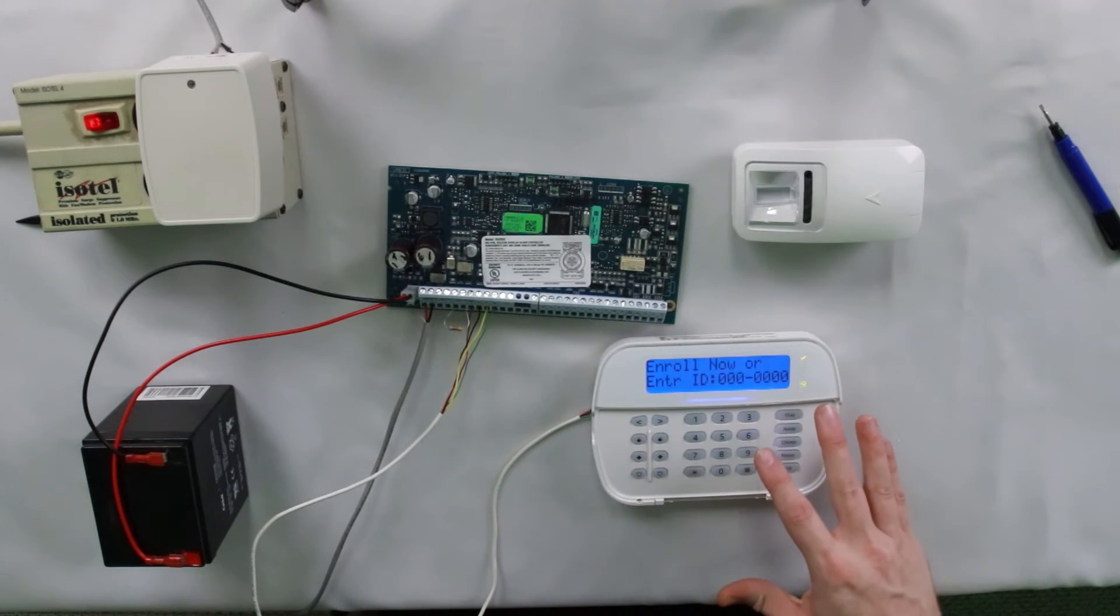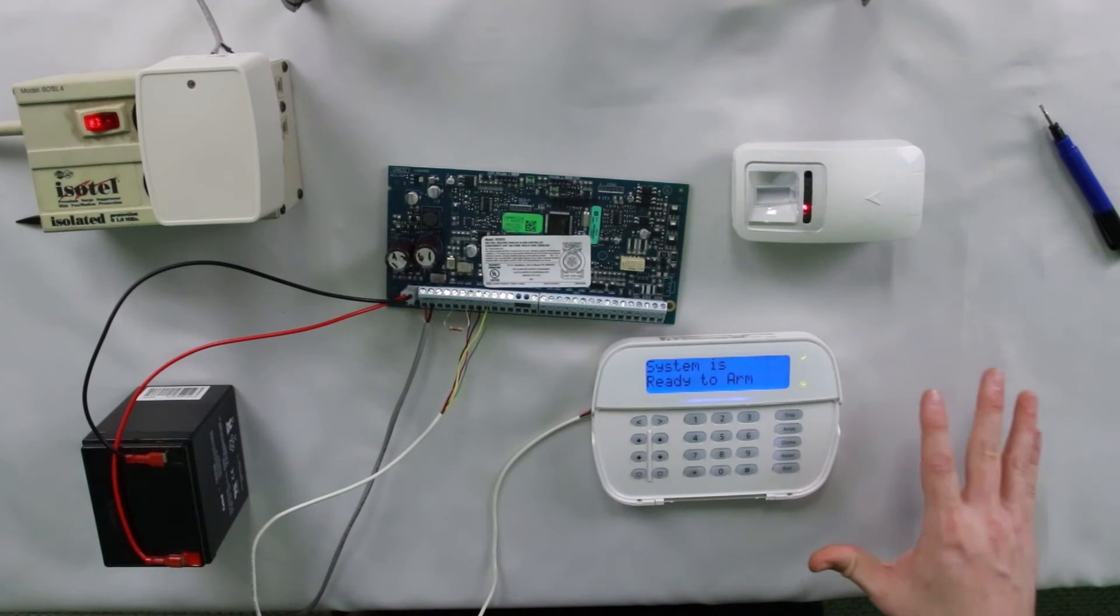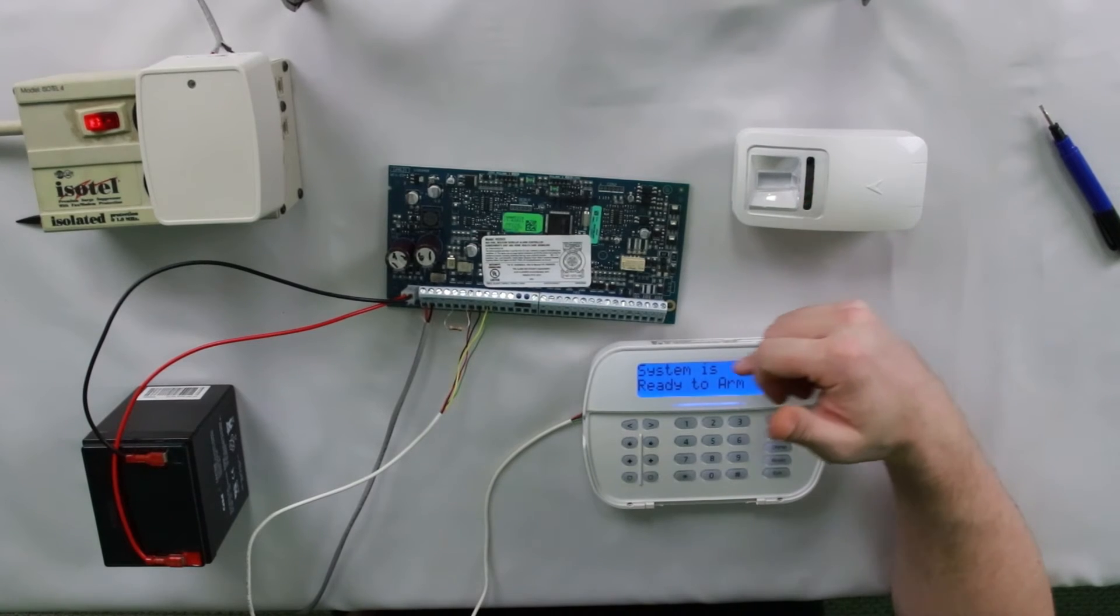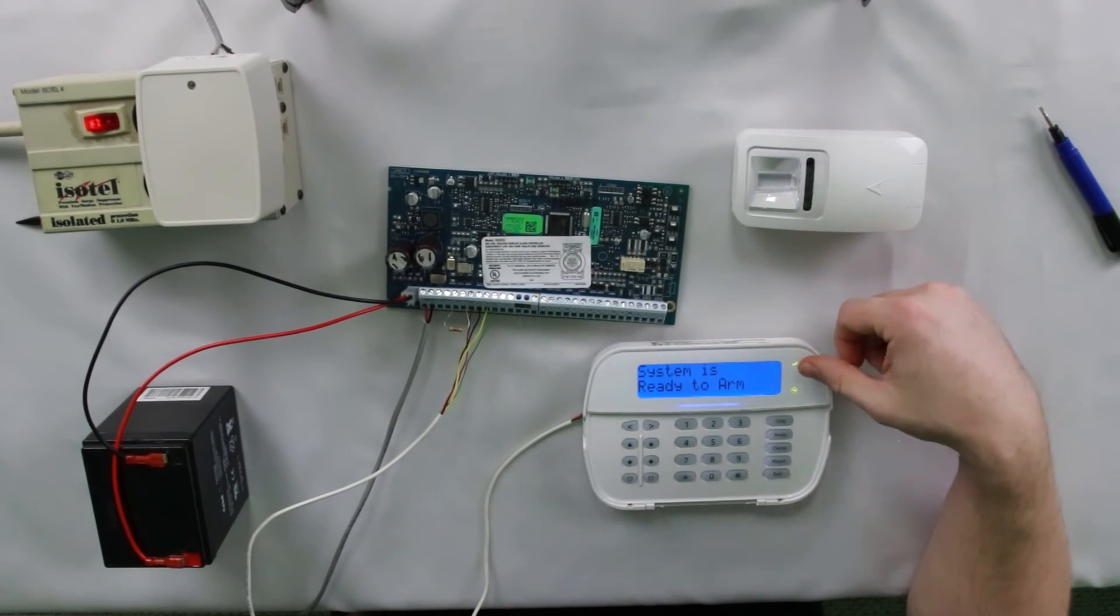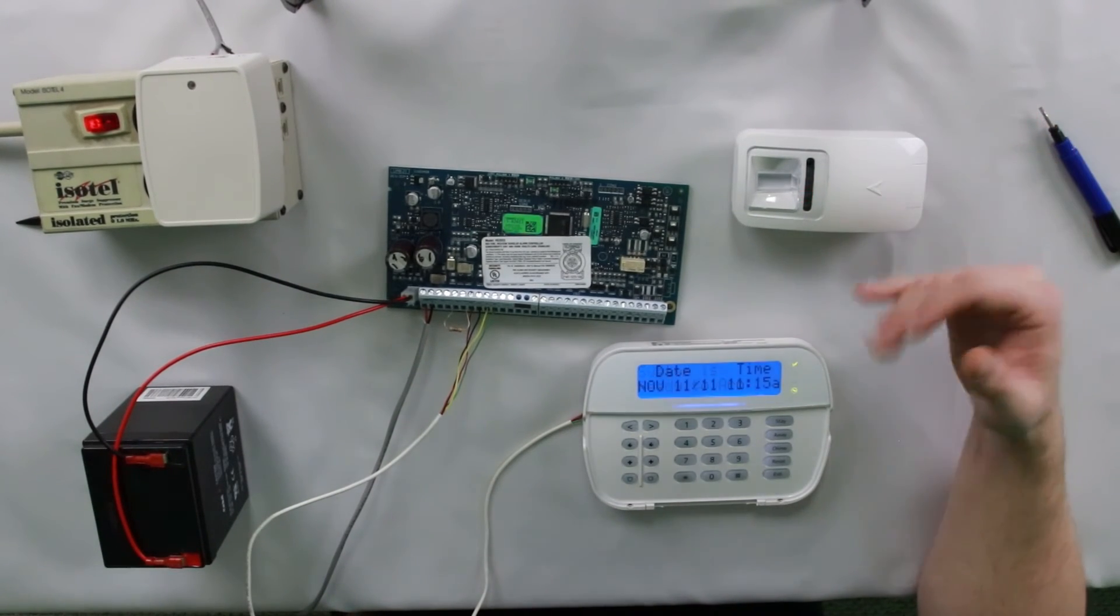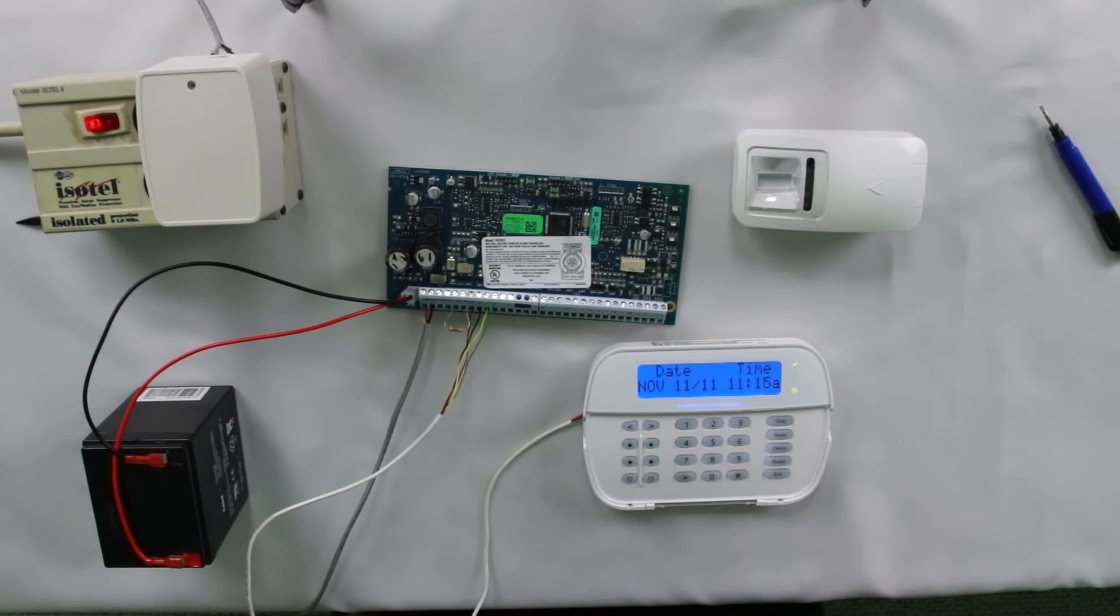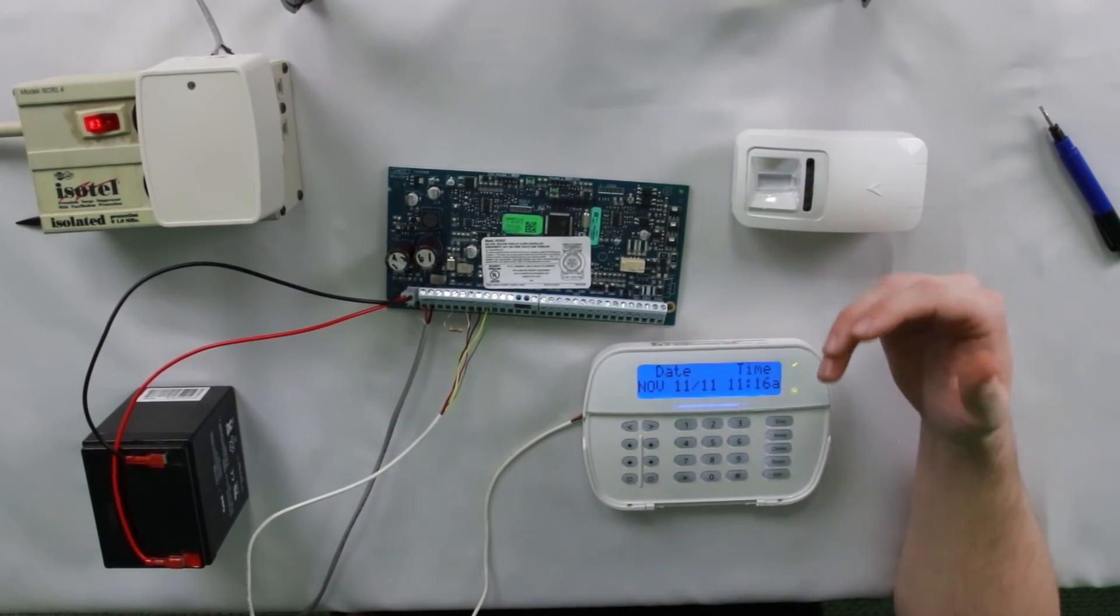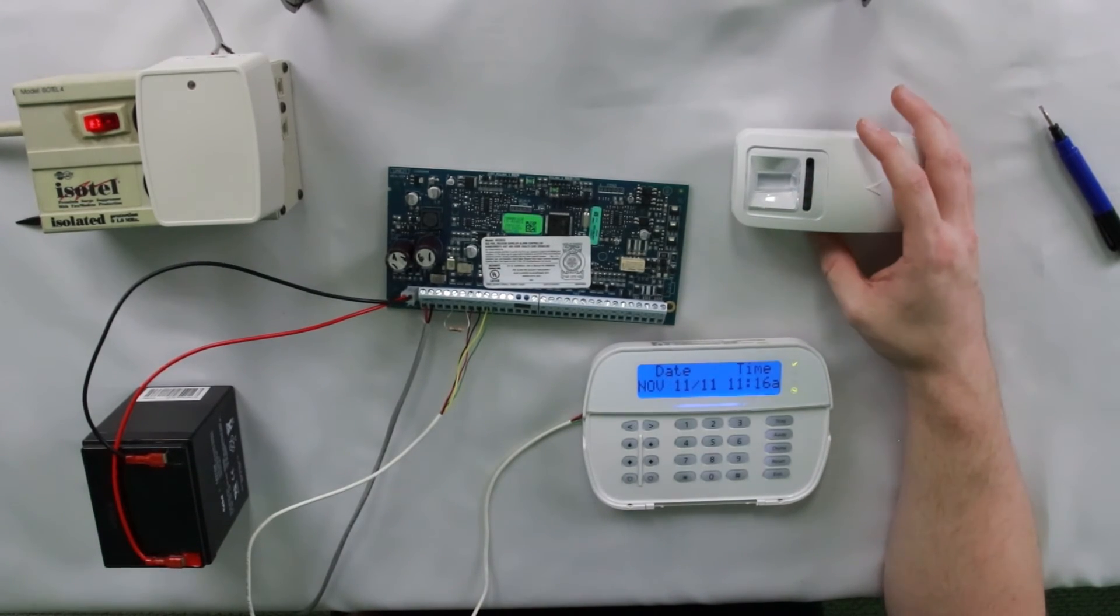Now you are done re-enrolling the device. At this point, you can just hit pound, pound, pound, pound. Back all the way out. Now as you can see, at least for me, I got system ready to arm. Everything is good to go on the system again. It cleared the troubles. And for you, it should also clear any stuck low battery troubles.